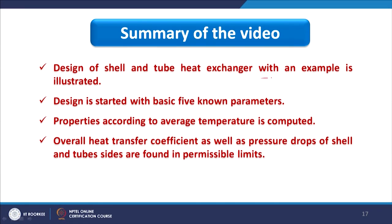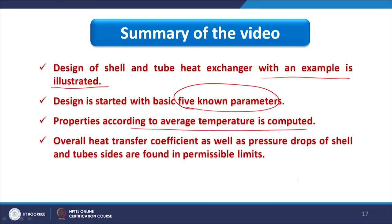Here is the summary of this video. We designed a shell and tube heat exchanger with Example 2, considering a toluene and water combination. Starting with five basic parameters, density data, and a pressure drop range less than 1 bar, properties were determined at average temperature as explained in Lecture 15. Overall heat transfer coefficient and pressure drops on both shell and tube sides were found within the permissible limit. Note: if pressure drop exceeds the limit on the shell side, you can reduce it by increasing baffle spacing and increasing baffle cut. Thank you.